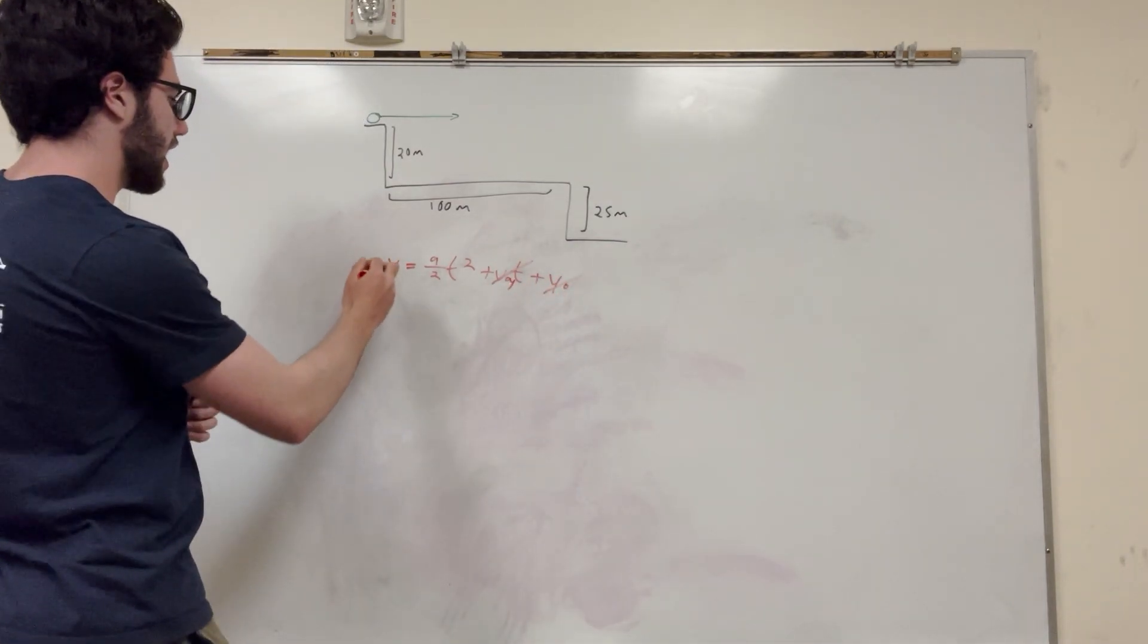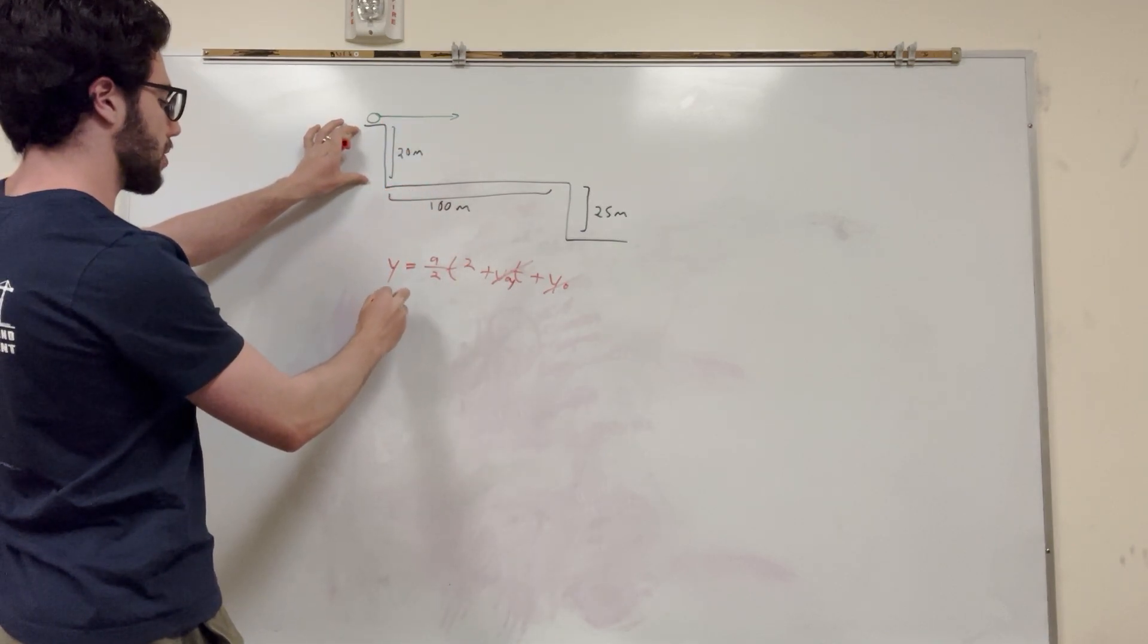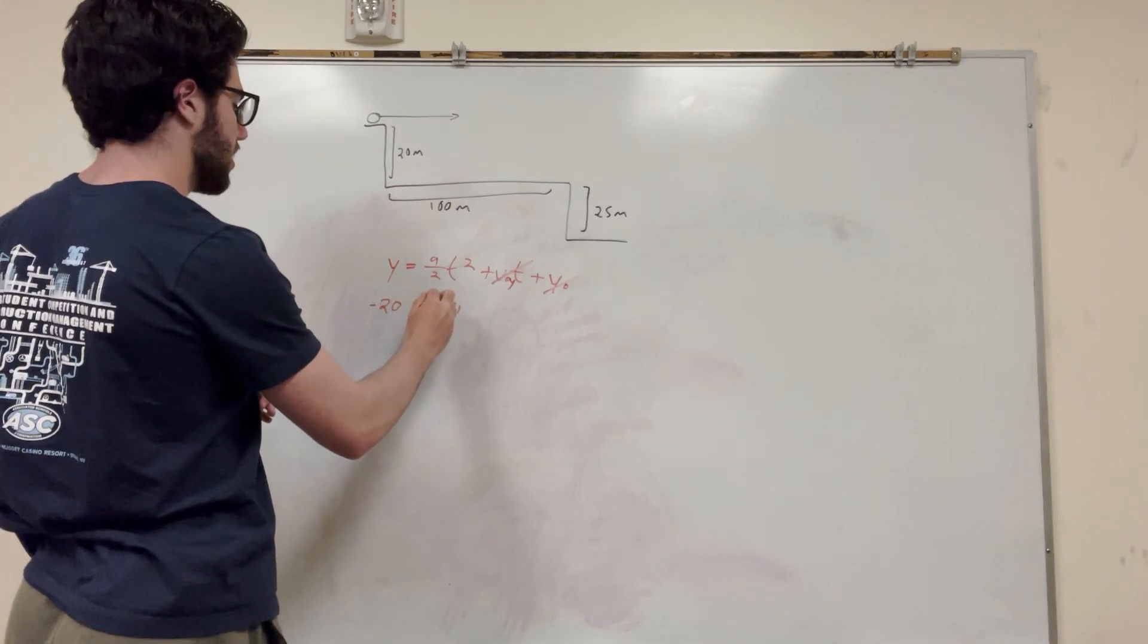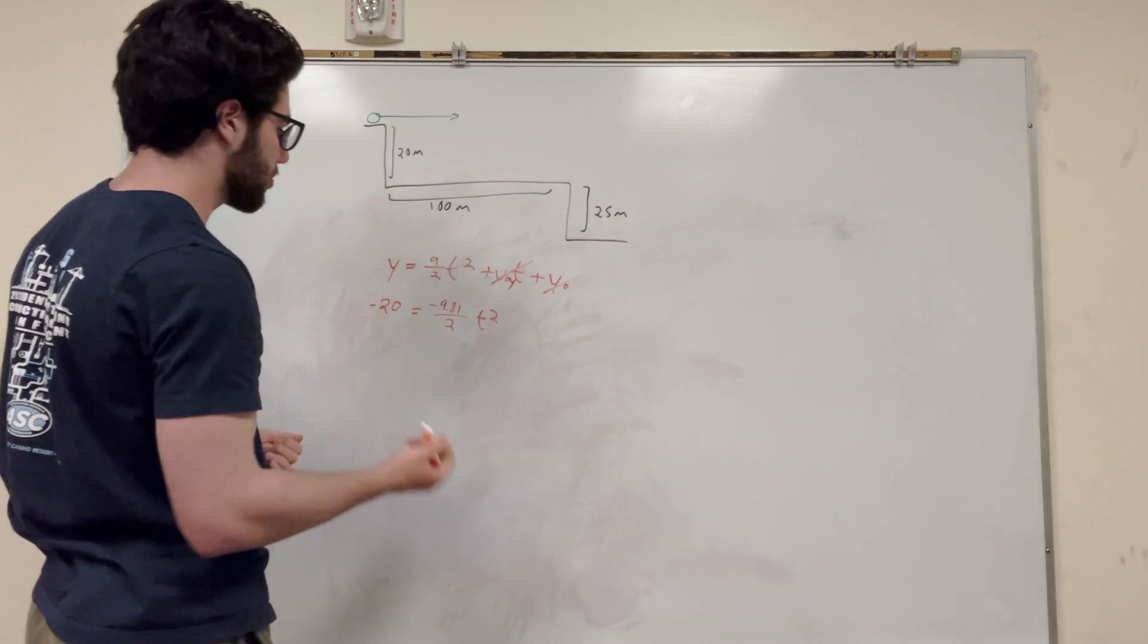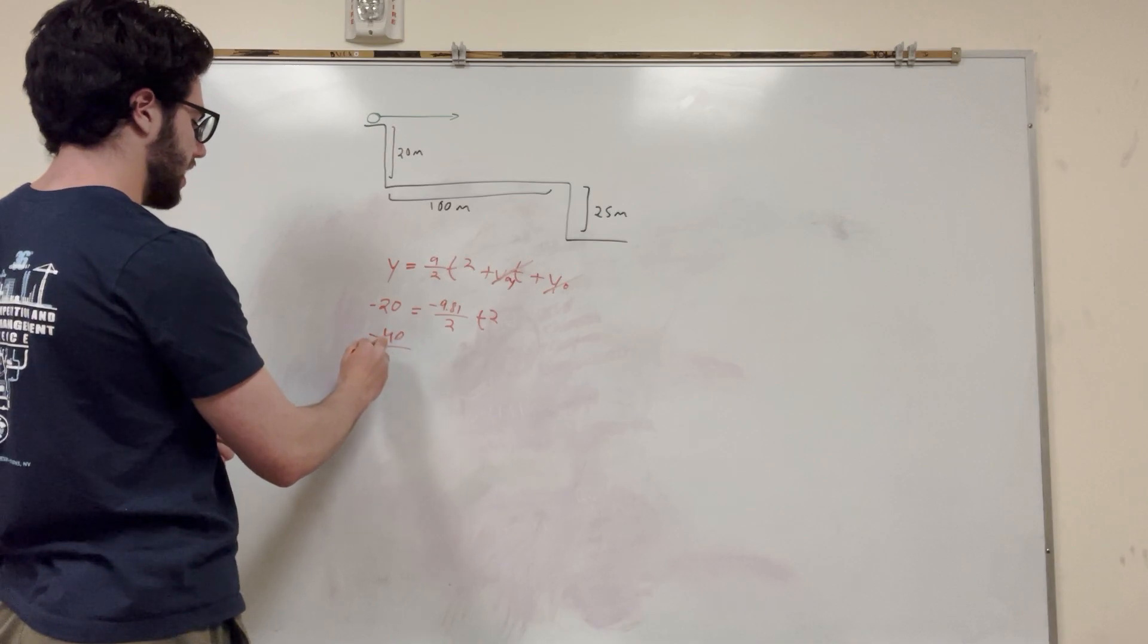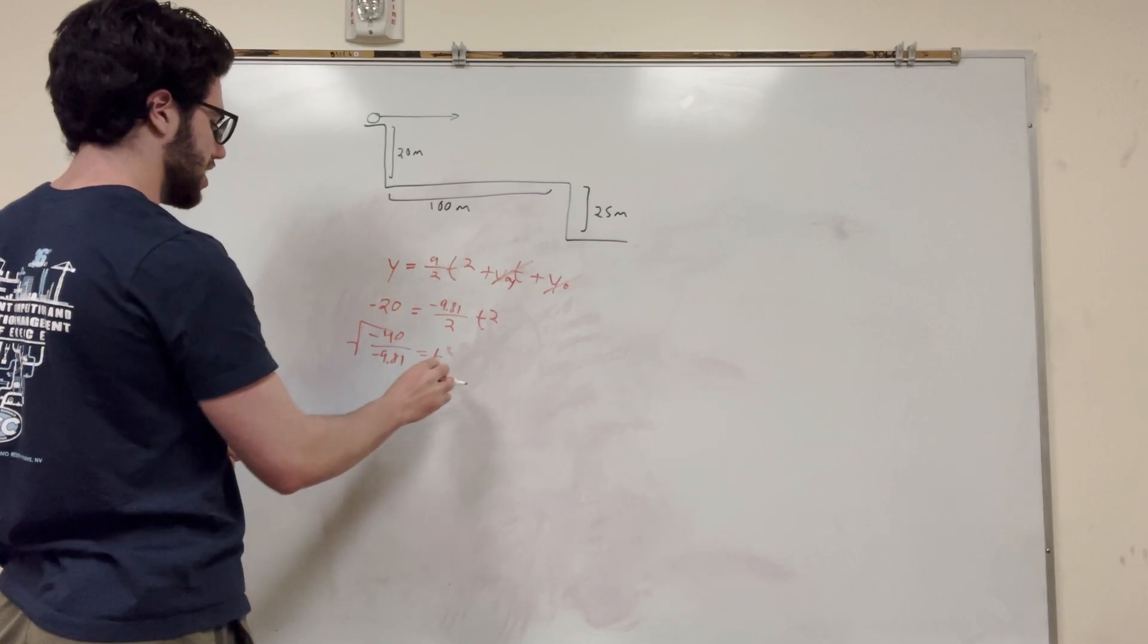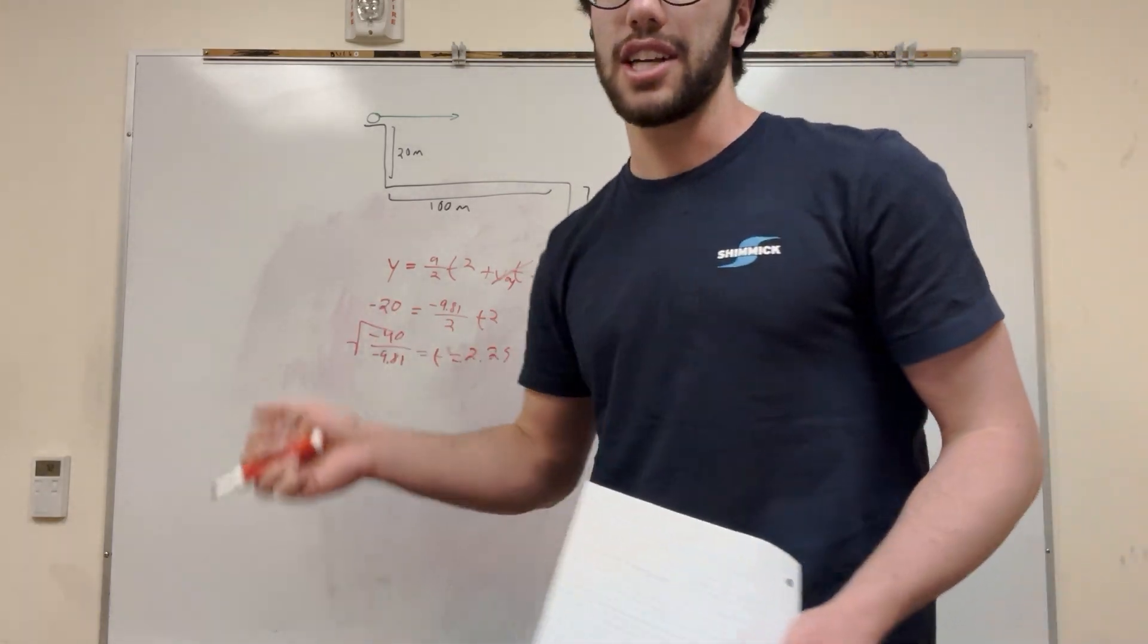And then what our equation is going to look like is y. We're going to see how long it takes to go down 20 meters. So y is going to be negative 20. That's where we're going to end up. So then I said this is going to be negative 9.81 for gravity divided by 2 because that's the equation, the kinematics equation, and then t squared. So we just have this one equation. So we move it over. So it's going to be negative 40 divided by negative 9.81 is equal to t squared. So if you take the square root of this, you're going to get t by itself. And that time is 2.2 seconds. 2.2 seconds. Great.